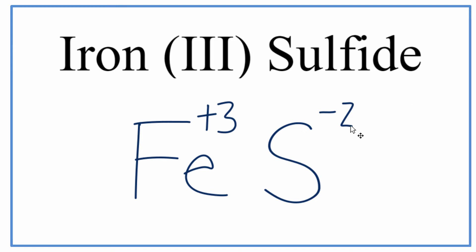So for the crisscross method, we'll take the charge, we'll put the two from the sulfur here on the iron, and the three from the iron down here as the subscript for the sulfur. And then we can get rid of this information up here. So that's the formula for iron three sulfide, but we do need to check our work.